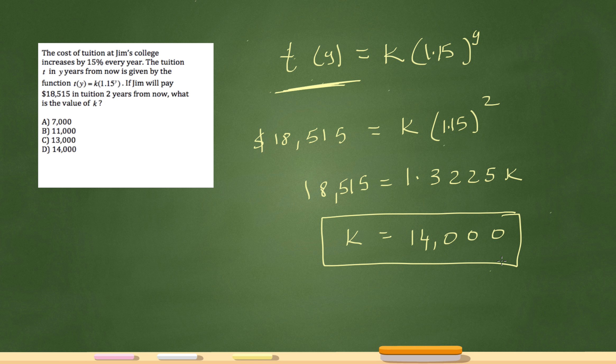I'm just going to give a quick recap just in case I confused you earlier. The real function is not 1.5. The function is t of y equals k times 1.15 to the y power. I figured out that the problem tells me y represents the years and t represents the tuition. And the scenario that the problem gives me is that the tuition is 18,515 two years from now. So that's why I got the 2 over there.